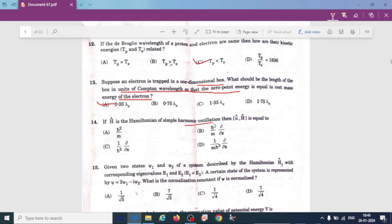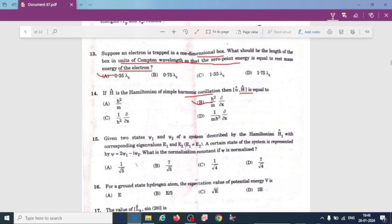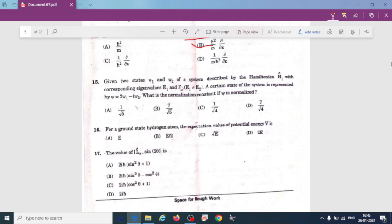The Hamiltonian of the simple harmonic oscillator is equal to - as we know, Hamiltonian is kinetic energy plus potential energy. So if we substitute operators for potential energy and kinetic energy, we will get option B here as h cross square divided by m d by dx. Given two states here, wave functions psi 1 and psi 2 of a system described by Hamiltonian H1 with corresponding eigenvalues E1 and E2. Certain state of system is represented by psi is equal to 2 psi 1 in terms of psi 1 and psi 2. What is the normalization constant if psi is normalized? So here option A is correct, one divided by root 5.